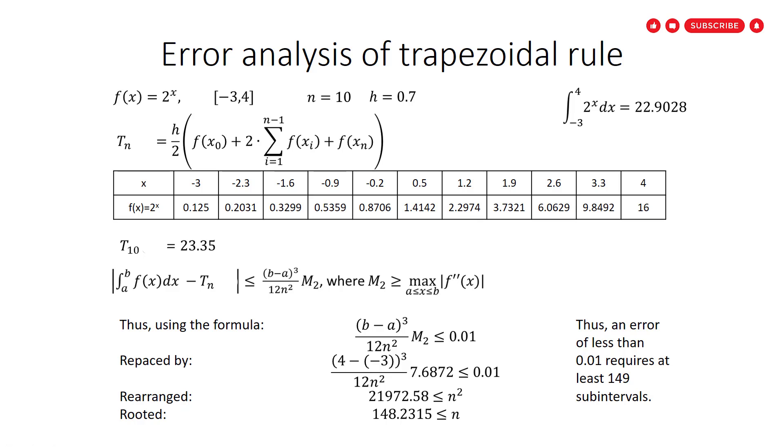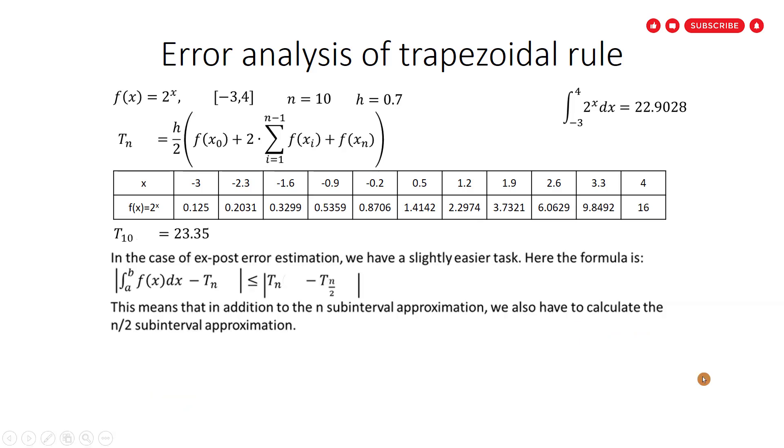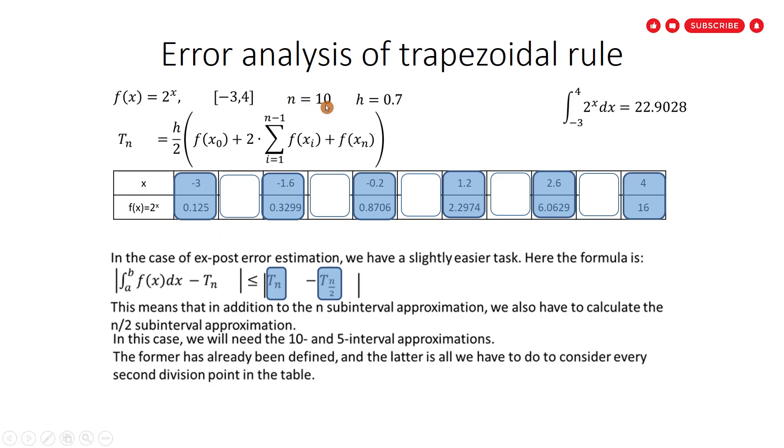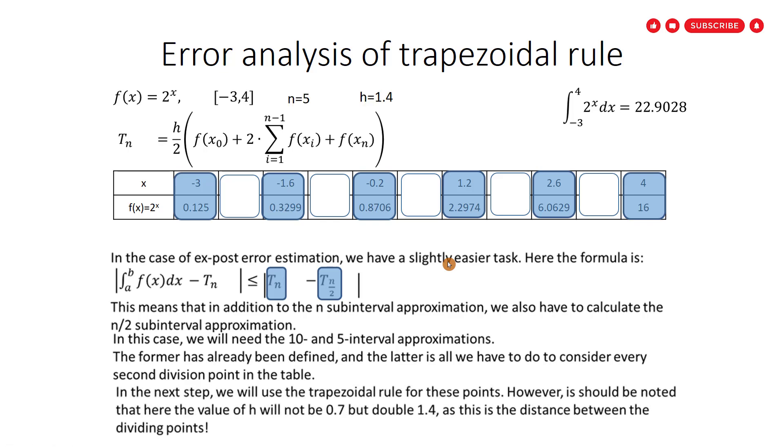That was the preliminary error. And for the case of post error, we have to find t_n and t_{n/2}. We already have the result for t_n. And we have to use the trapezoidal rule to find t_{n/2}. For finding t_{n/2}, we just consider every second division point as we see. In this case, n changed from 10 to 5 and h from 0.7 changed to 1.4.